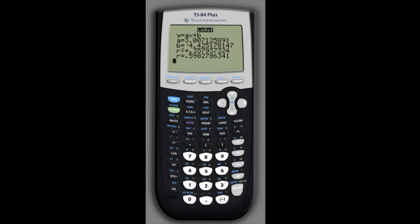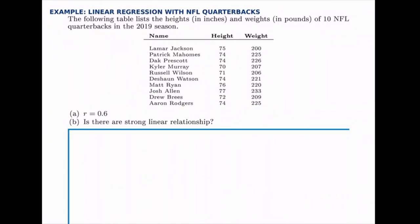The first part of the question asks for the value of r, so now we have that. For the second part, we want to know if there is a strong linear relationship. Based on r, we know first of all that there is a positive relationship since r is positive. We wouldn't necessarily say it's a strong relationship because it's less than 0.8, which is an agreed-upon level for a strong relationship. At 0.6, we'd say there is a moderate linear relationship, and a moderate relationship is good enough to continue on.